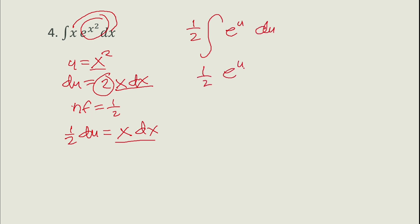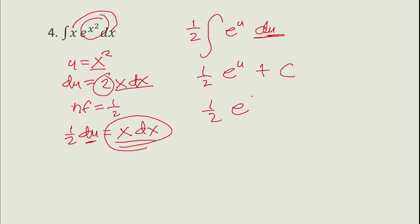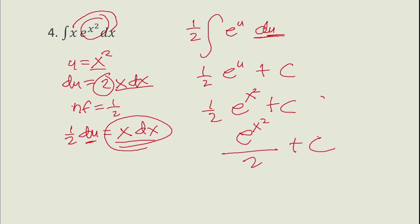So the result is one half times e^u plus c. Substituting back u = x², the final answer is one half e^(x²) plus c, which can also be written as e^(x²) over 2 plus c.